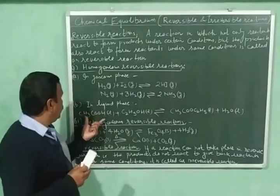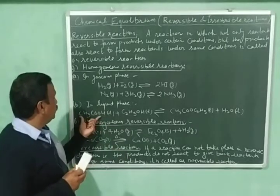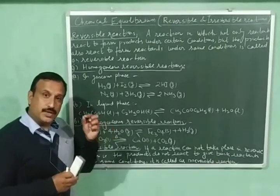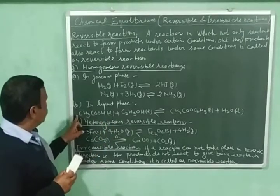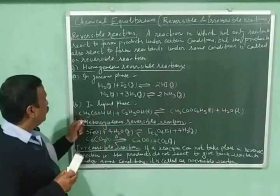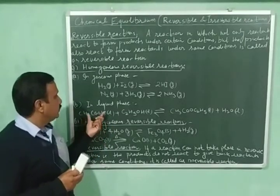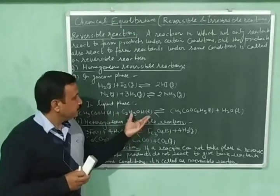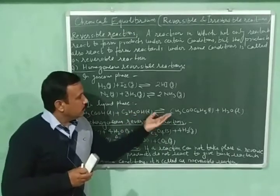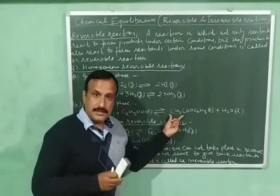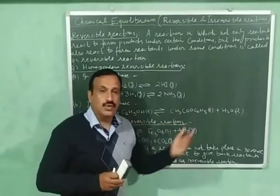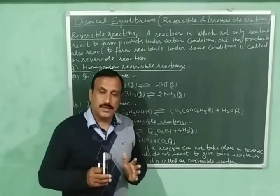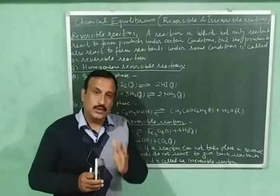Here is an example of a homogeneous reversible reaction occurring in liquid phase. One mole of acetic acid is reacting with one mole of ethyl alcohol giving one mole of ethyl acetate and one mole of water. So all the reactants and products are present in the liquid phase.